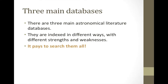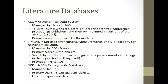There are three main astronomical literature databases. They're indexed with different ways and different goals, and they have different strengths and weaknesses. It really does pay to think about looking in all three of them and to approach it using their strengths.